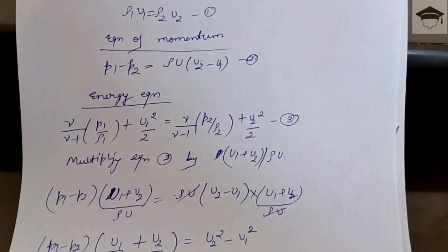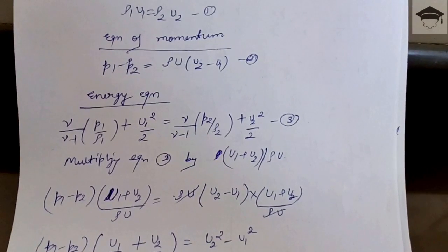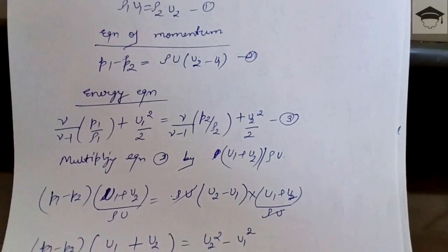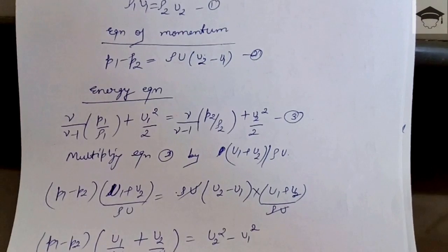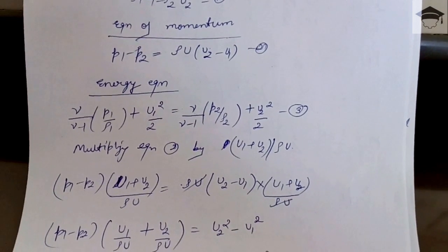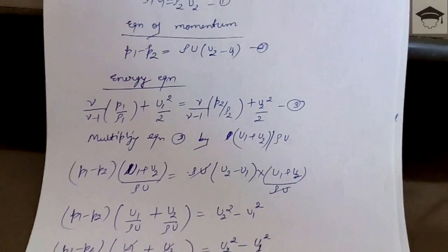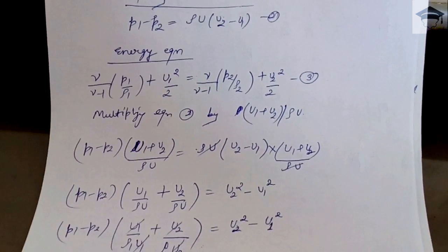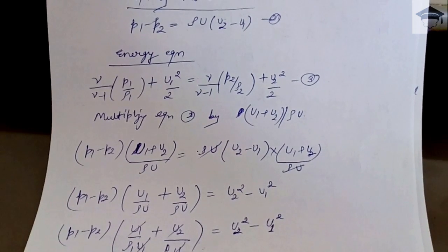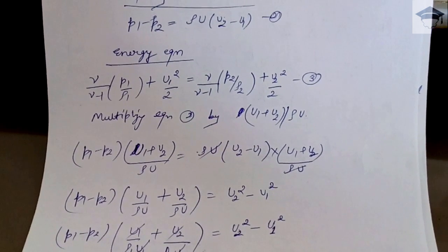So ρu and ρu gets cancelled. Final equation we get after manipulating is (p1-p2) × (1/ρ1 + 1/ρ2) = u2² - u1².